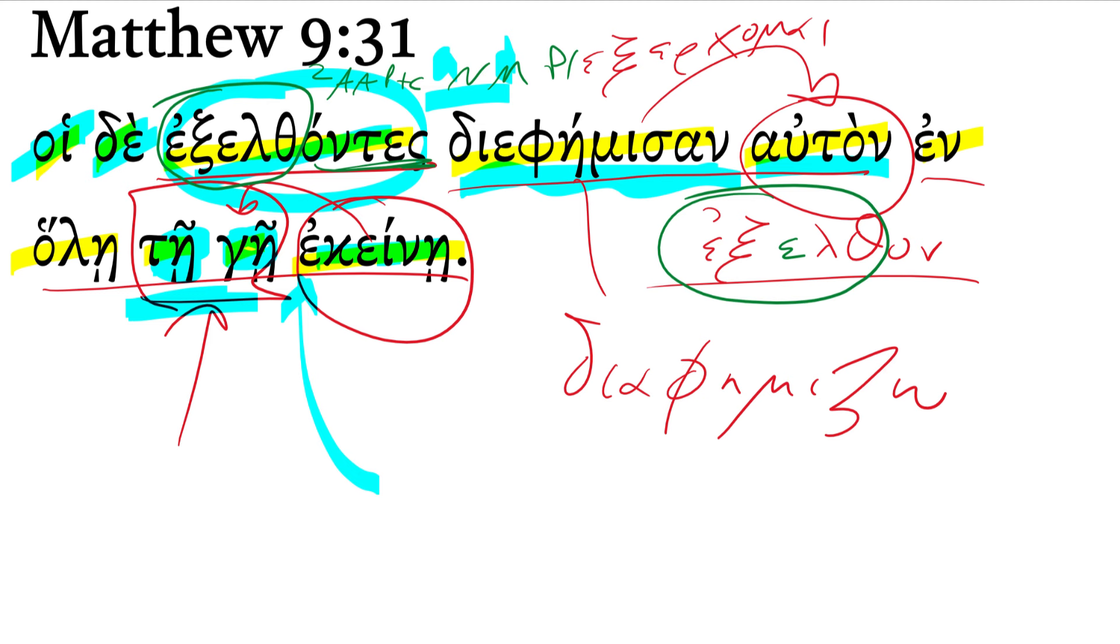And we translated it as a participle of attendant circumstance along with the main indicative verb, adding in the word 'and.' And notice how the article here functions like a pronoun—rather than autoi, we have hoi. We often find this in the Gospels; rather than autos, we will have ho.